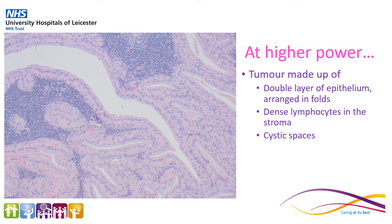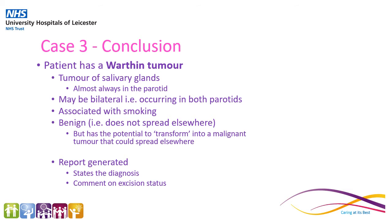Looking at this tumour on higher power, it has a really quite unusual appearance. It's made up of a double layer of epithelial cells, which are these light-coloured ones, and these are arranged in complex folds. The stroma, the underlying tissue of the tumour, has areas of dense lymphocytes — the blue dots we've seen before — and it also has these cystic spaces. Case 3 is an example of a Warthin's tumour. This is a tumour of the salivary glands and almost always occurs in the parotid. They can be bilateral and they are associated with smoking. They are a benign tumour, i.e. they do not spread elsewhere, but they do have the potential to turn into a malignant tumour which could spread elsewhere. We would generate a report stating the diagnosis and commenting on if the tumour is completely excised.